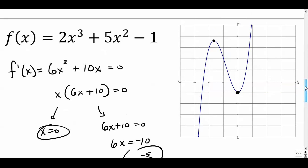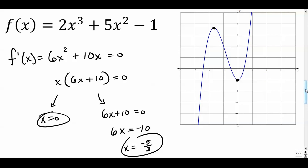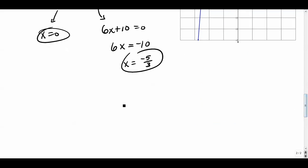To verify, we can see on the graph that this is around negative one point five, so negative five-thirds, which is negative one point six repeating, looks correct for a maximum. And x equals zero is right here on the graph. Let's set up the number line with zero and negative one point six repeating for the first derivative test.